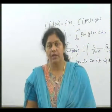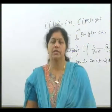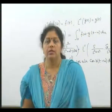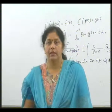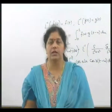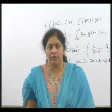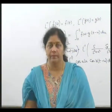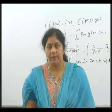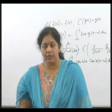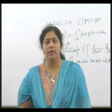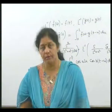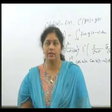If L inverse of F-bar(s) equals f(t) and L inverse of G-bar(s) equals g(t), then L inverse of F-bar(s) times G-bar(s) is defined as the integral from 0 to t of f(u) times g(t minus u) du, or in general it is written as f convolution g, denoted f star g, representing the convolution or folding of f and g.